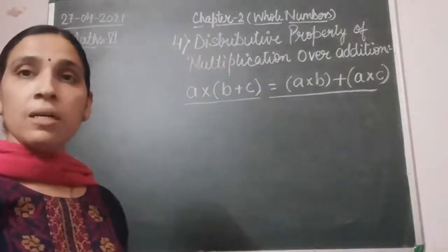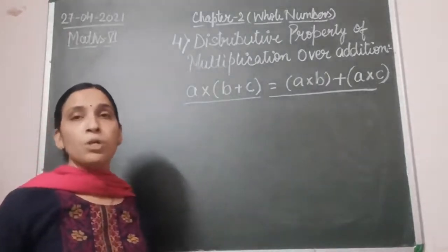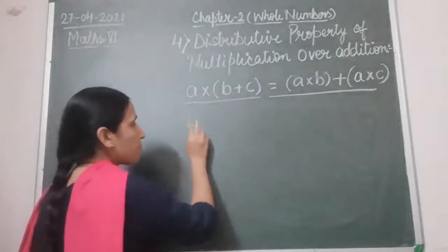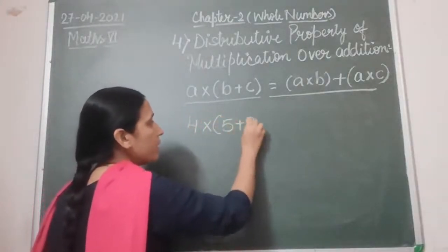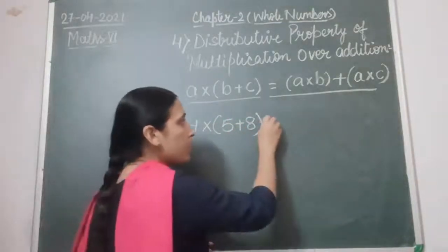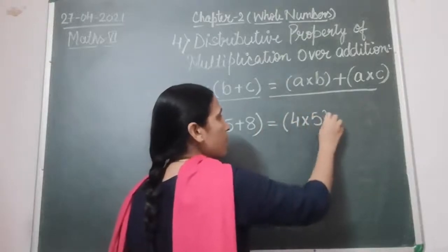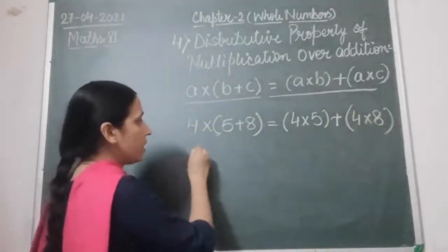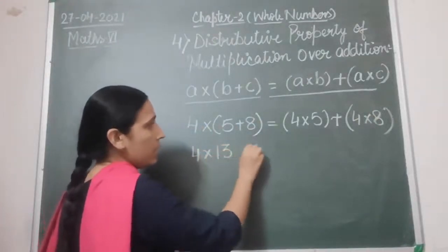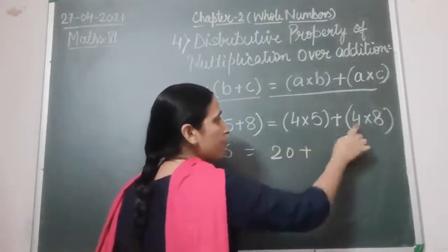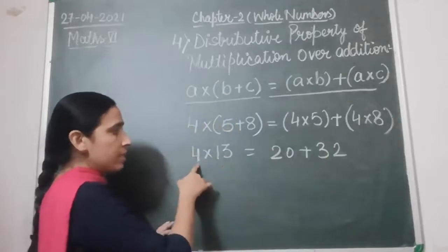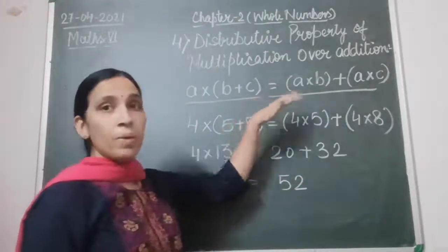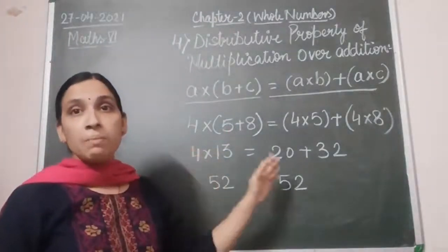We often use this property in questions. For example, if we are given 4 into (5 plus 8), we open this using distributive property as 4 into 5 plus 4 into 8. On the left side, 4 multiplied by 13 gives 52. On the right side, 4 fives are 20 plus 4 eights are 32, which also gives 52. Both sides are equal, confirming the property holds.